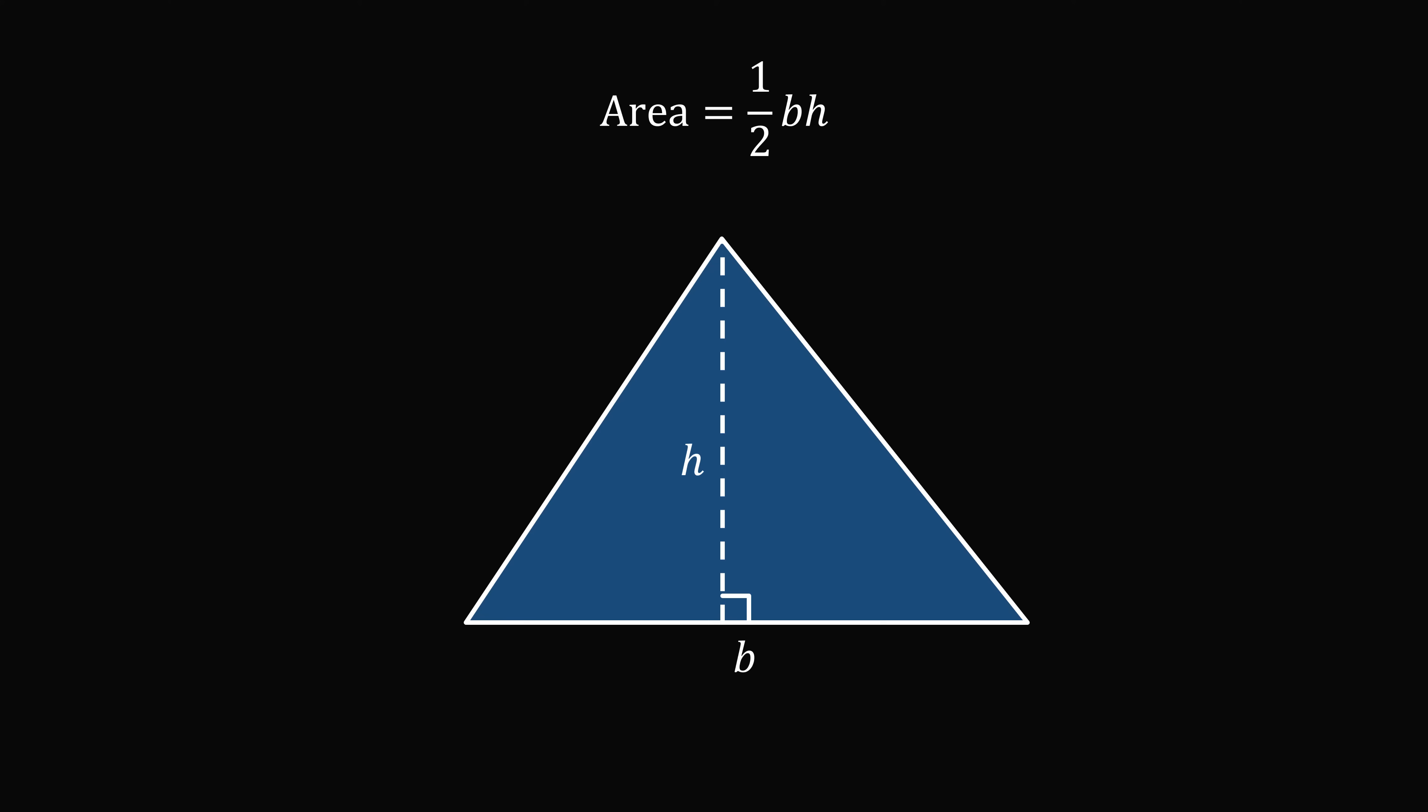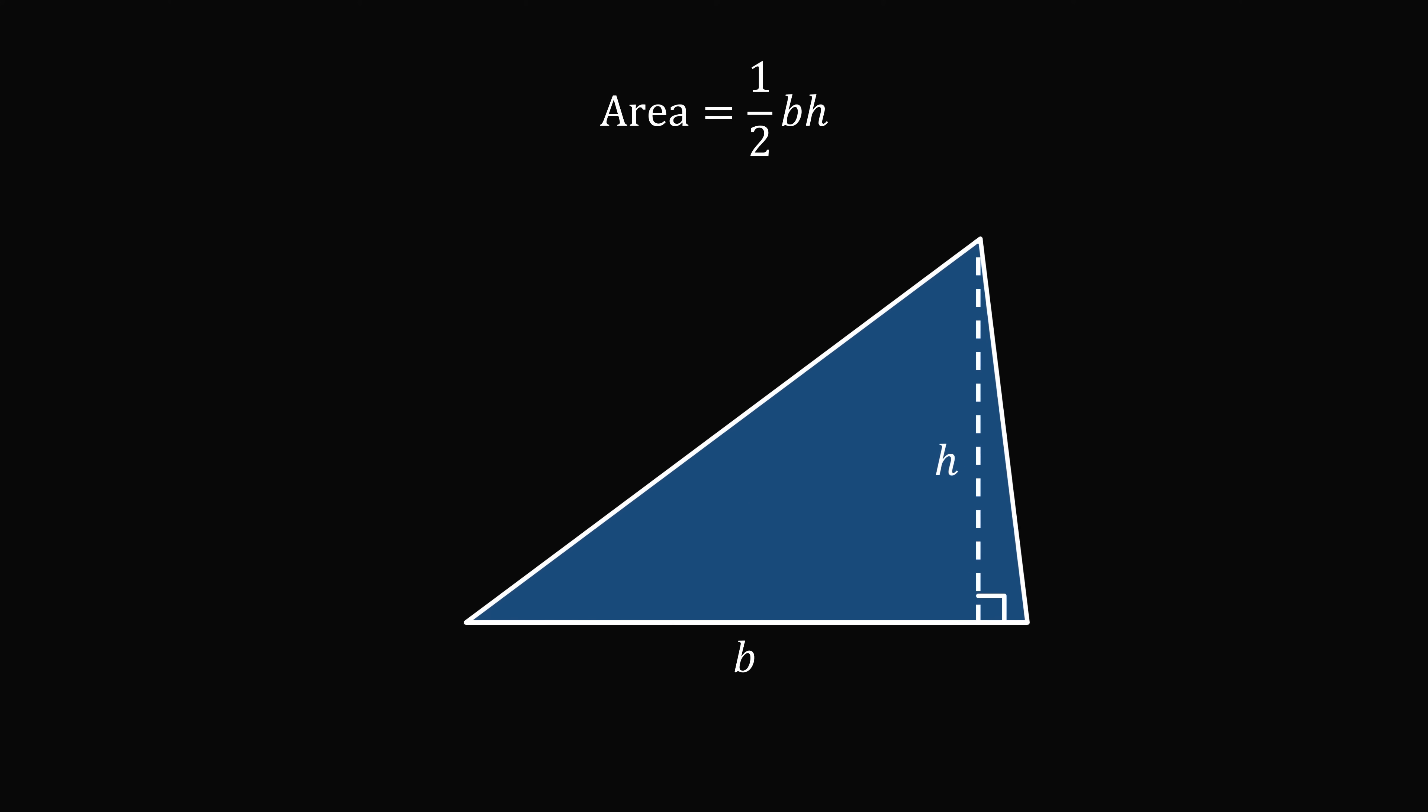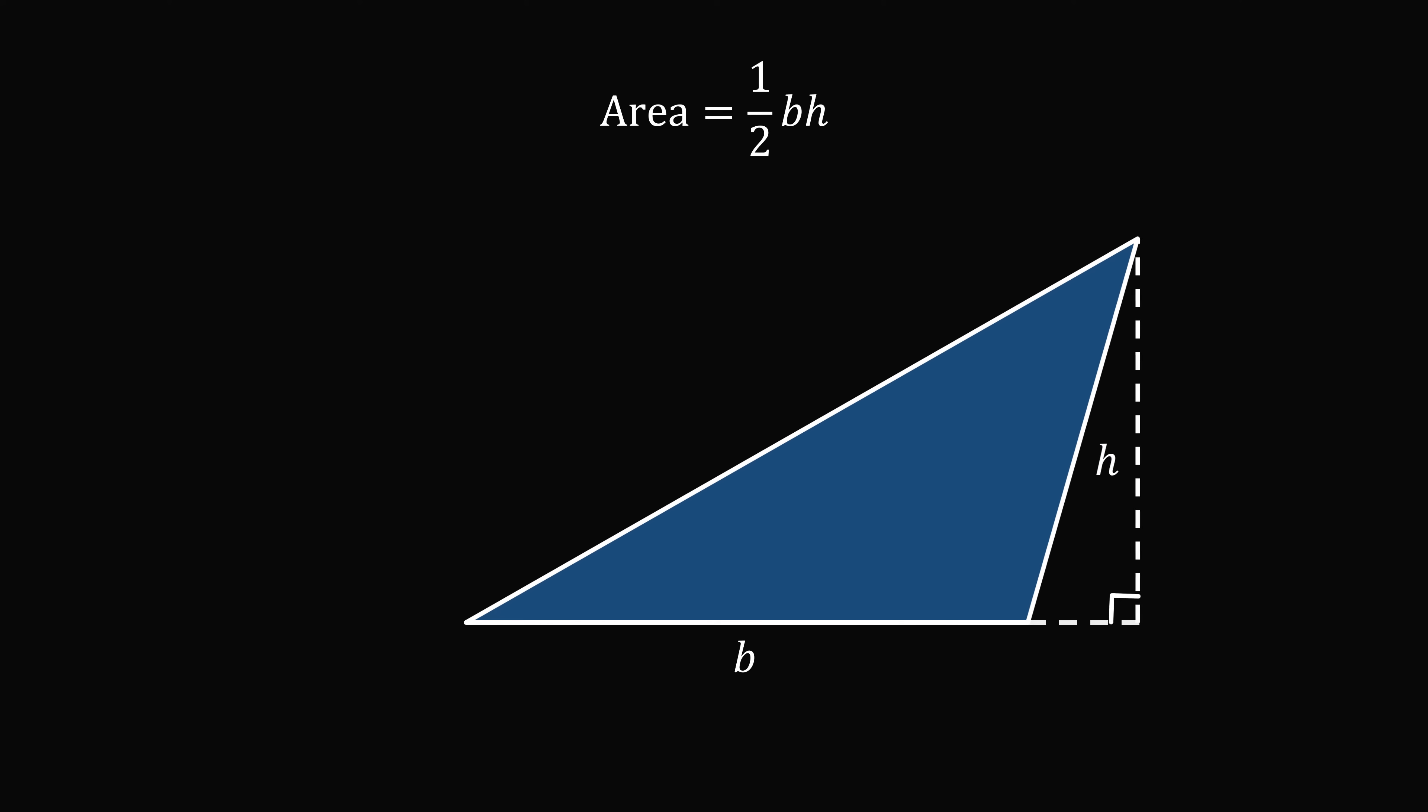So all triangles that have the same base and the same length of the height will have the same area. This is true even if the height is outside of the triangle. So area equals one half times B times H.